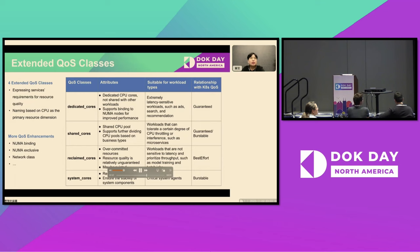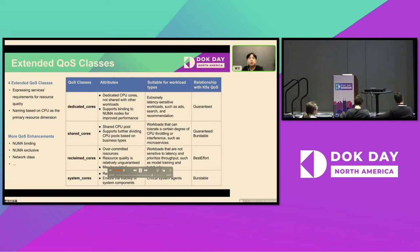The second one is shared cores, and workloads with this QoS class will run in a shared CPU pool. This QoS class is suitable for workloads that can tolerate a certain degree of CPU floating and interference, such as microservices. The third one is reclaimed cores, and workloads with this QoS class will use overcommitted resources. This QoS class is suitable for workloads that are not sensitive to latency and prioritized throughput, such as model training and data jobs. The last one is system cores, suitable for critical system agents.